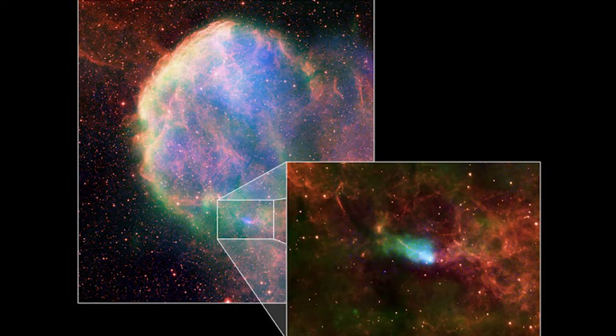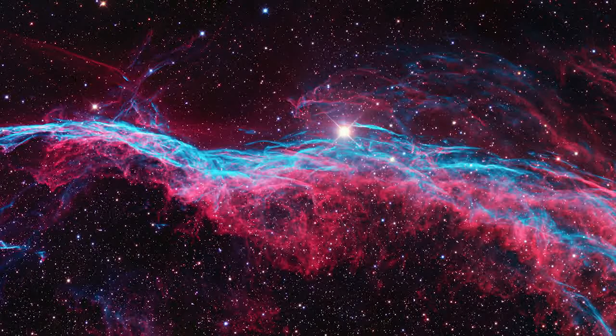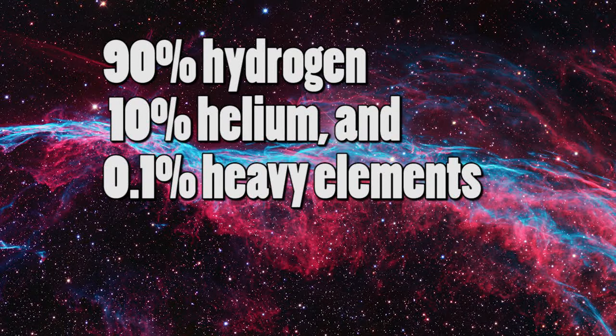These colors are result of different elements being in the nebula. Most nebulae are composed of 90% hydrogen, 10% helium and 0.1% of other heavy elements.